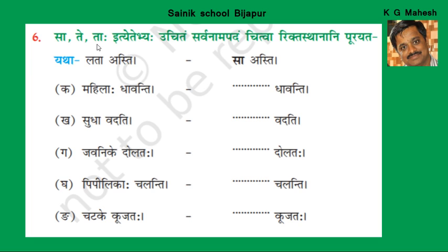Taha Balikaha iti bhavadhi. Punar ekavaram pashyamaha — Lataha asti, Sa asti. Mahilaha dhavanti — Dhavanti is Bahuvachanam, so Taha dhavanti. Sudha vadati — Sudha is Ekavachanam, Sa vadati. Javanike dolataha — Javanike is Dvivachanam, Te dolataha.